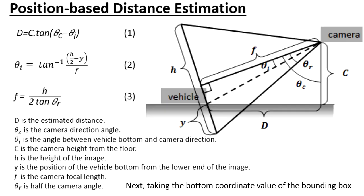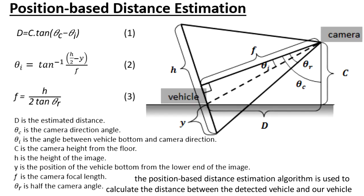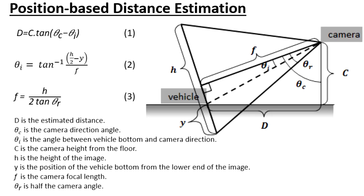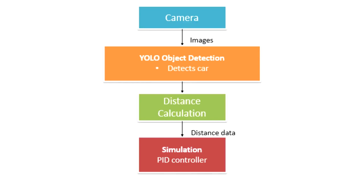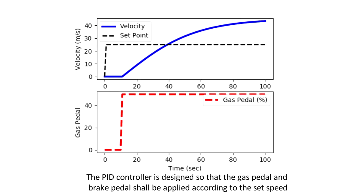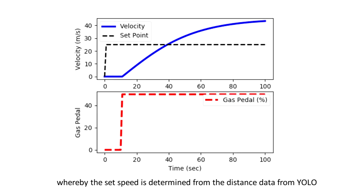Next, taking the bottom coordinate value of the bounding box, the position-based distance estimation algorithm is used to calculate the distance between the detected vehicle and our vehicle. The distance data obtained from the algorithm is fed into the last block of our design: a PID controller. The PID controller is designed so that the gas pedal and brake pedal are applied according to the set speed, whereby the set speed is determined from the distance data from YOLO.